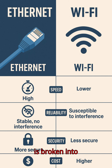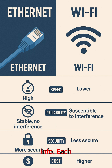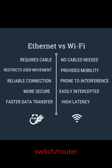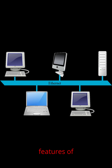Data is broken into frames, like envelopes with sender and receiver info. Each device has a MAC address — a unique hardware ID. The switch or router directs frames to the correct device.